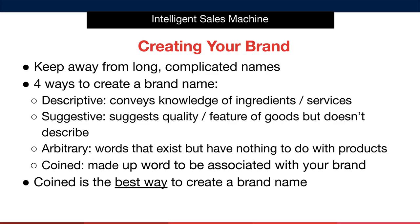Second, we have what we call a suggestive mark. This suggests a quality or feature of your product, but doesn't describe the actual products within the brand. For example, Coppertone or Home Depot. The problem here is that it creates an association with a certain type of product or ingredient.